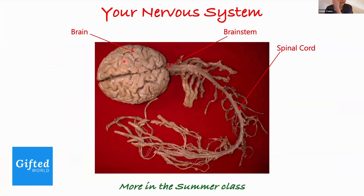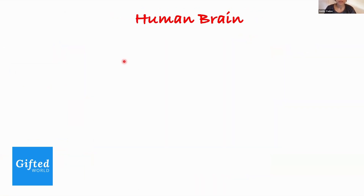We'll cover this in more depth in the class — the smaller units of the nervous system, the axons, which are crucial in receiving, processing, and transmitting information.